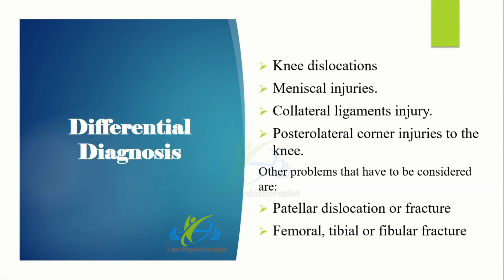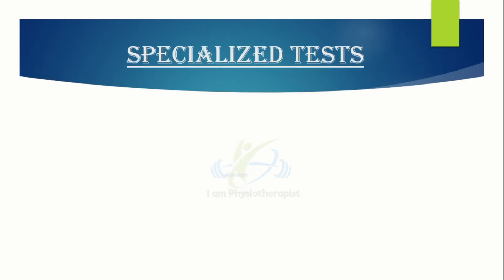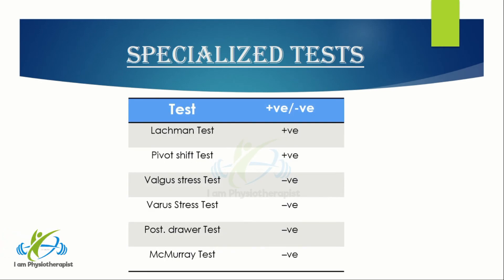Differential diagnosis included knee dislocation, meniscal injuries, collateral ligament injury, posterolateral corner injuries to the knee, patellar dislocation or fracture, and femoral, tibial, or fibular fracture. Lachman test and pivot shift test were positive. Valgus stress test, varus stress test, posterior drawer test, and McMurray test were negative.